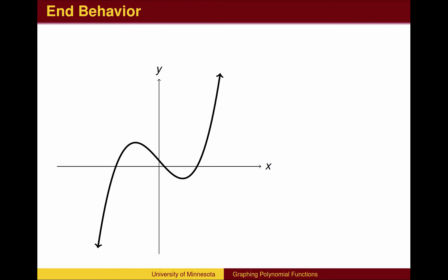End behavior is the tendency of the graph to the far right and far left. In other words, to the right, x is very large and positive. The end behavior is a description of what is happening to the y-values when x goes far to the right, getting bigger and bigger. We can also look at what happens as x goes to the left, that is, when x is large and negative.